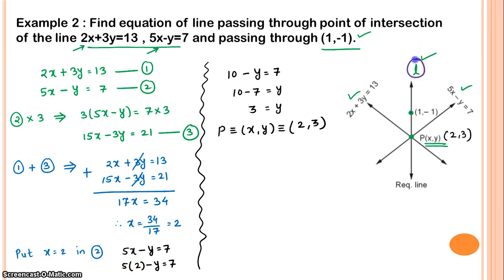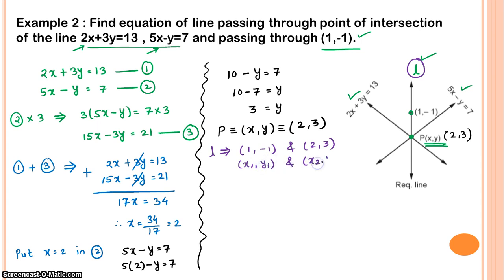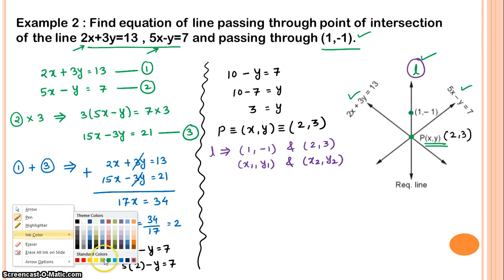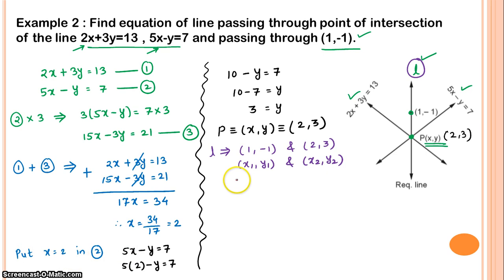Now we find the equation of the line passing through two points: (1, minus 1) and (2, 3). Let (x1, y1) equals (1, minus 1) and (x2, y2) equals (2, 3). We use the two-point form formula: (y2 minus y1) divided by (x2 minus x1) equals (y minus y1) divided by (x minus x1).